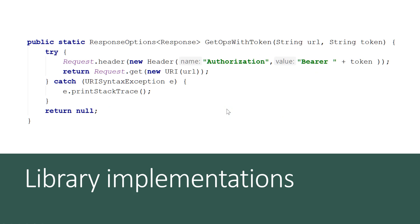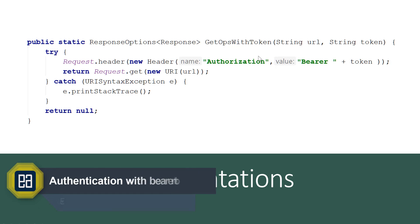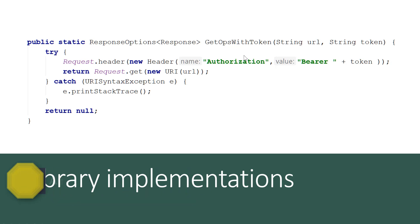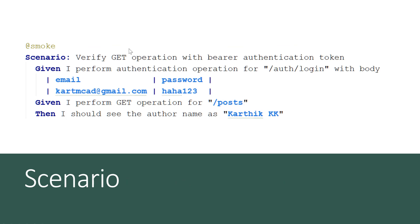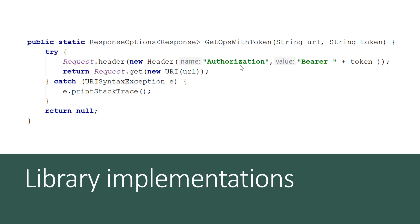The method we are going to add is something like this. The GET operation with token is a new method where you need to pass the token so we can add it to the header information — something like request.header of new Header class, passing authorization and the value as 'bearer' plus the token. Once we add the header, we perform the GET operation, and if correct, it returns the response. Then you can verify if the author name has Karthik KK in it.